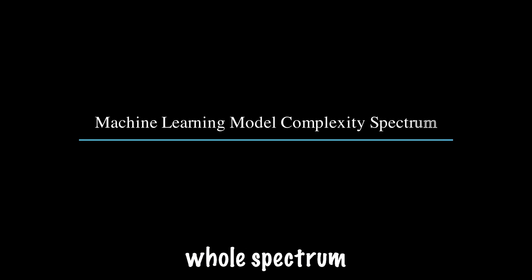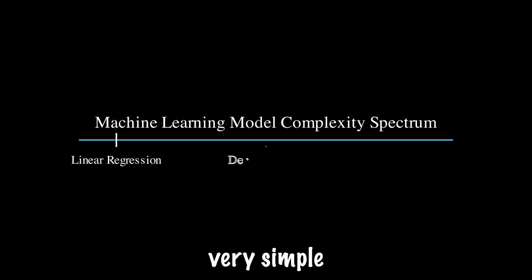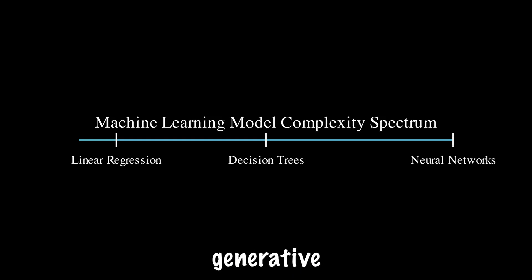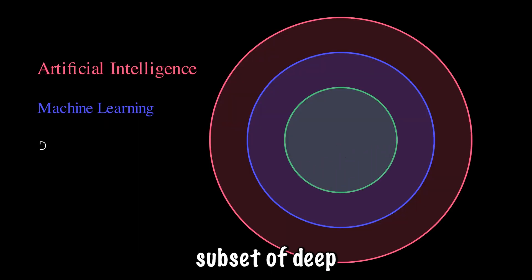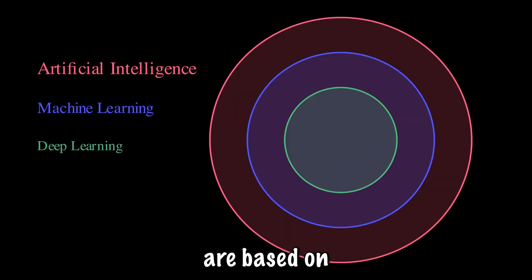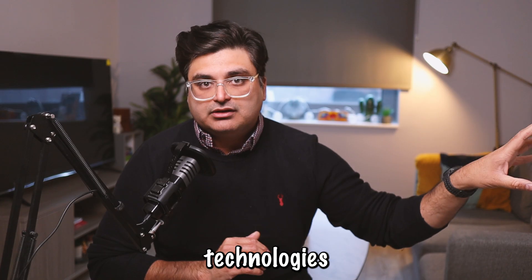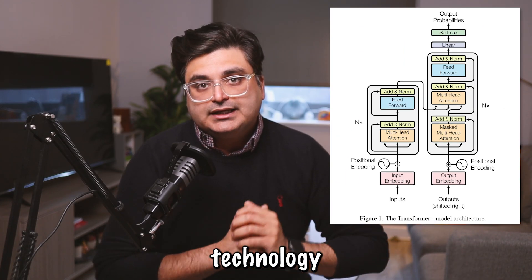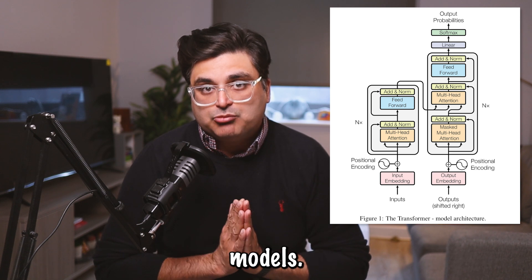Machine learning is a very broad field and there's a whole spectrum of models, going from very simple models like linear regression to very complex models like deep neural networks. Generative AI is a subset of deep learning models, and the generative AI models are based on transformer technologies, whose core is deep learning.